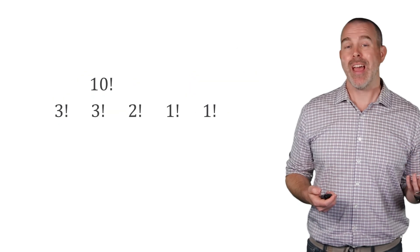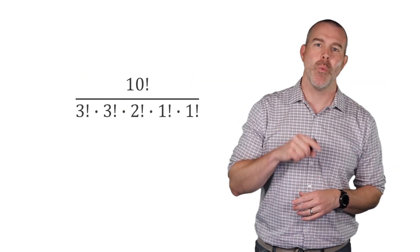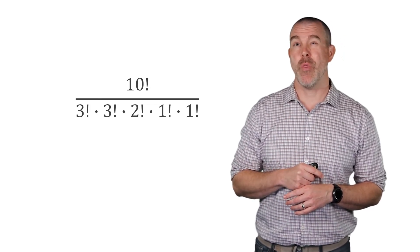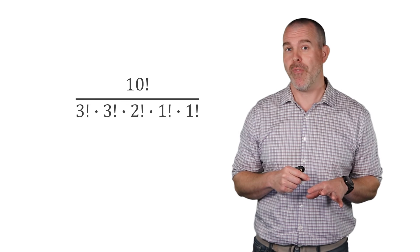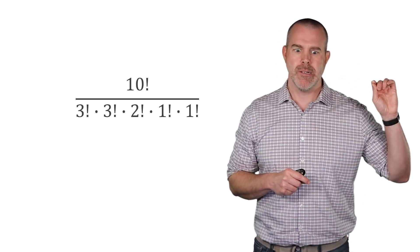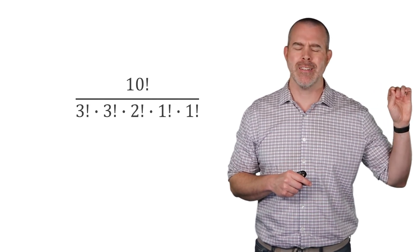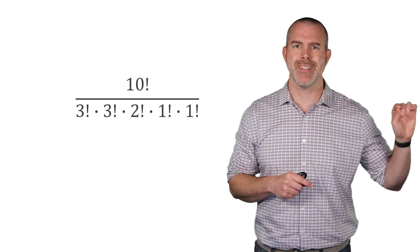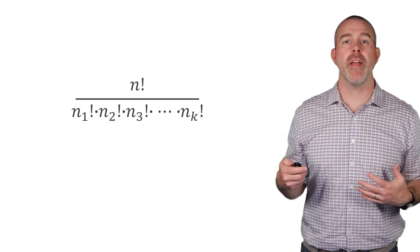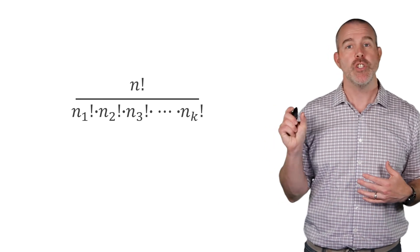And so now we actually just have 10 factorial over 3 factorial, 3 factorial, 2 factorial, 1 factorial, 1 factorial. If you think about where these all came from, that's from the three Ts, three S's, what else was in there? Two Is, an A, and what else was there? A C. So in general, you have the total n factorial, and then you divide by the factorial for how many there are of each type.